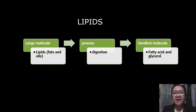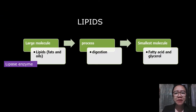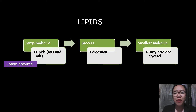Lipids, like fats and oils, are large molecules. During the process of digestion, the lipids enzyme breaks them into the smallest molecules called fatty acids and glycerol. Fatty acids are important in your body. If glucose isn't available for energy, your body uses fatty acids to energize or fuel the cell. Likewise, glycerol is used by your body in improving hydration.